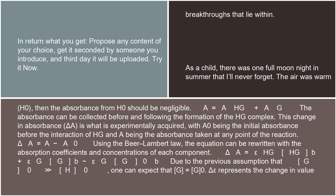Therefore A = A_HG + A_G. The absorbance can be collected before and following the formation of the HG complex. This change in absorbance, delta A, is what is experimentally acquired, with A0 being the initial absorbance before the interaction of HG and A being the absorbance taken at any point of the reaction. Delta A = A − A0. Using the Beer-Lambert Law, the equation can be rewritten with the absorption coefficients and concentrations of each component.